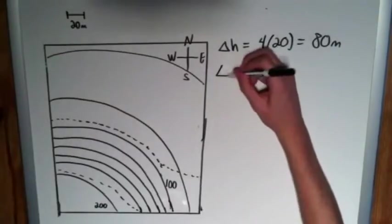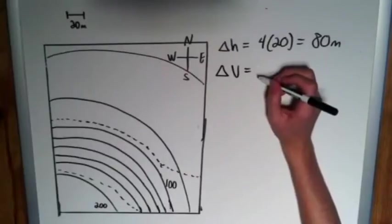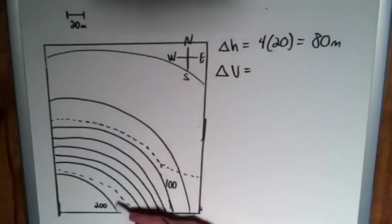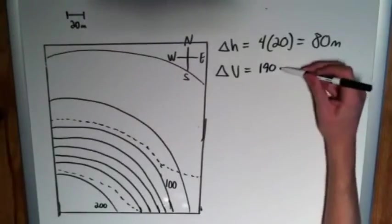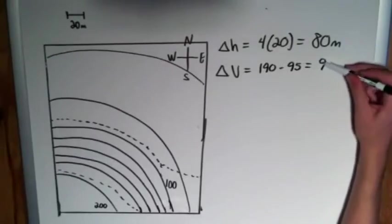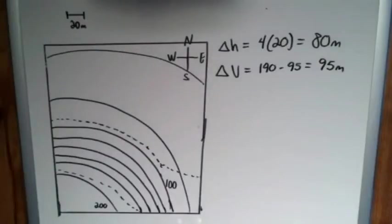So we'll say, just rounding again, it doesn't have to be perfect when we're dealing with things between contour lines. We'll say that delta V is going to be something minus - actually we'll go from our upper value first. This one appears to be more in the middle between 200 and 180, so we'll call that 190 minus 95, which, hey what do you know, it's 95 meters.